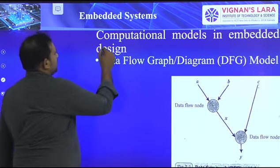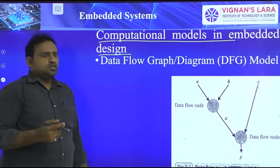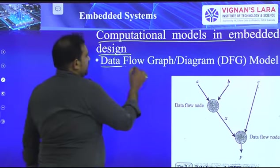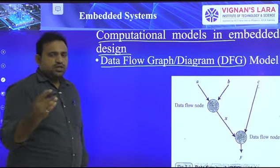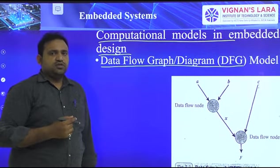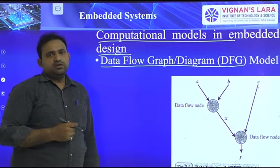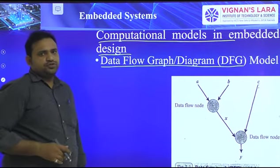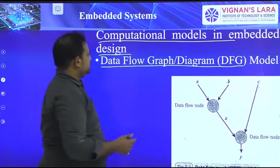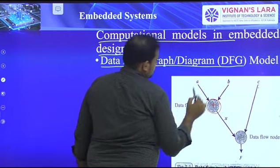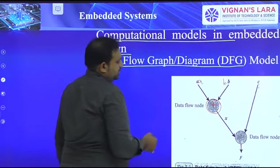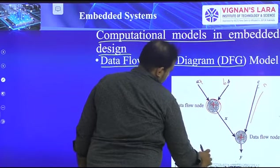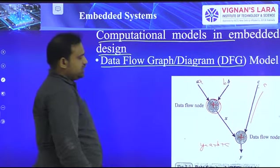The second topic is computational models in embedded system design. What are the different computational models? First is the data flow graph model. Just as in VLSI we follow behavioral, data flow, and structural models, here in embedded system design there are also computational models to choose from. In the data flow graph model, variables A and B are added — C equals A plus B — and the result is given directly by an adder. So Y equals A plus B plus C. This is the data flow graph model.